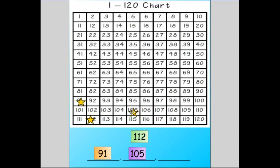And after 105, I continue to travel down the 120 chart. The last number I see is 112. That means 112 will be the largest value of the three. And here is my number pattern that was ordered from least to greatest: 91, 105, 112.